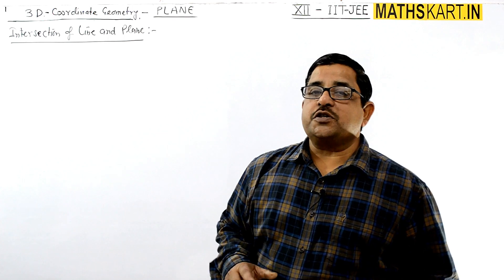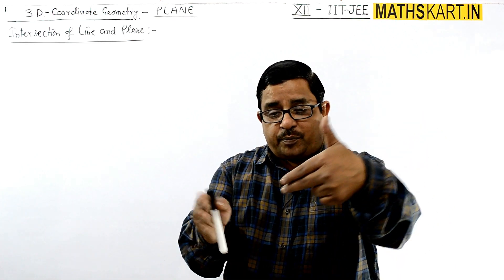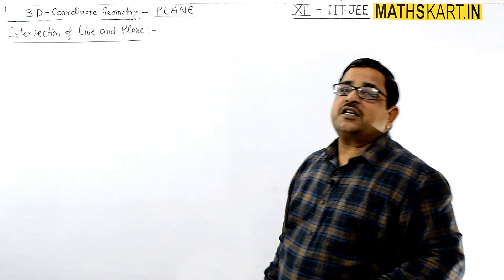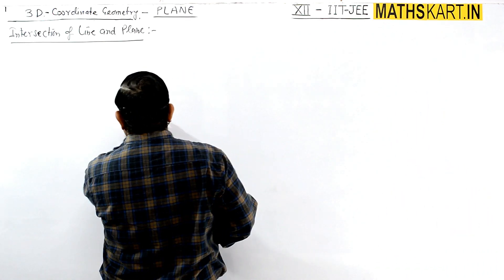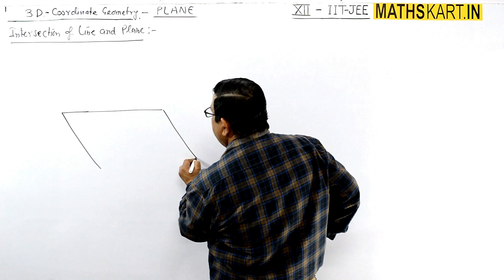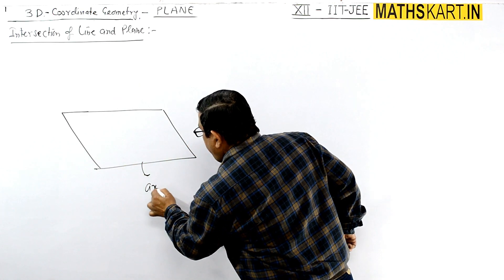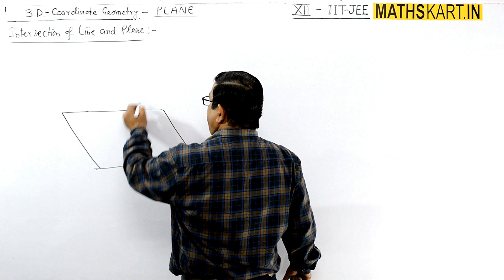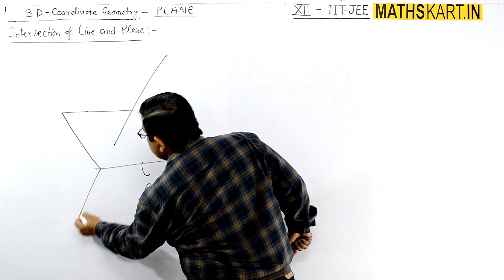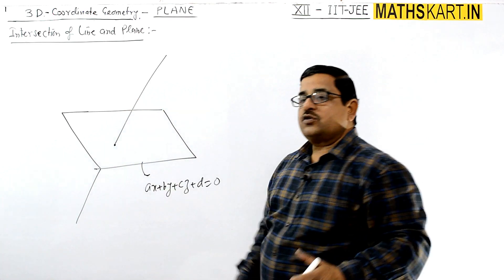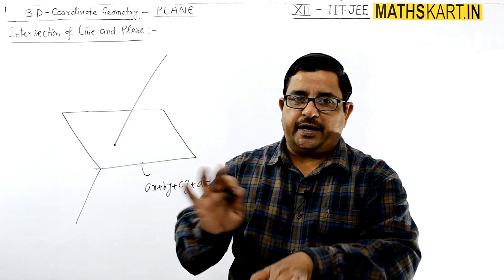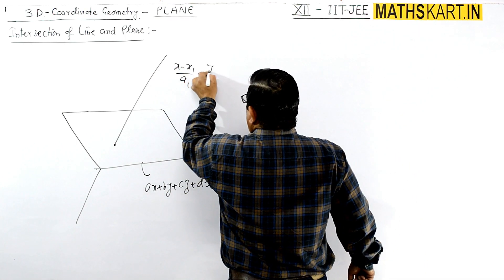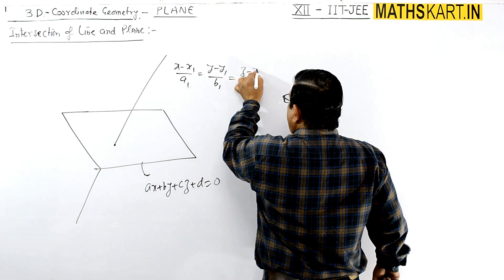Next application: intersection of line and plane. If a plane is given with equation ax + by + cz + d = 0, and a line intersects it, the line's equation is (x - x1)/a1 = (y - y1)/b1 = (z - z1)/c1. We need to find the relationship between the line and the plane.